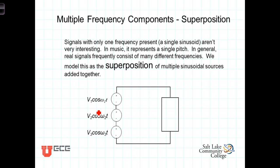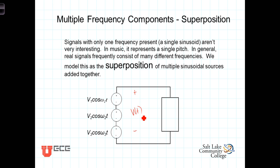For example, we can think of a time domain function v(t) consisting of three different components: one component oscillating at ω1 radians per second with an amplitude of v1, added to a second component oscillating at ω2 radians per second with an amplitude of v2, and finally a third component oscillating at ω3 radians per second with an amplitude of v3. Thus, our time domain signal v(t) consists of the sum of those three terms.